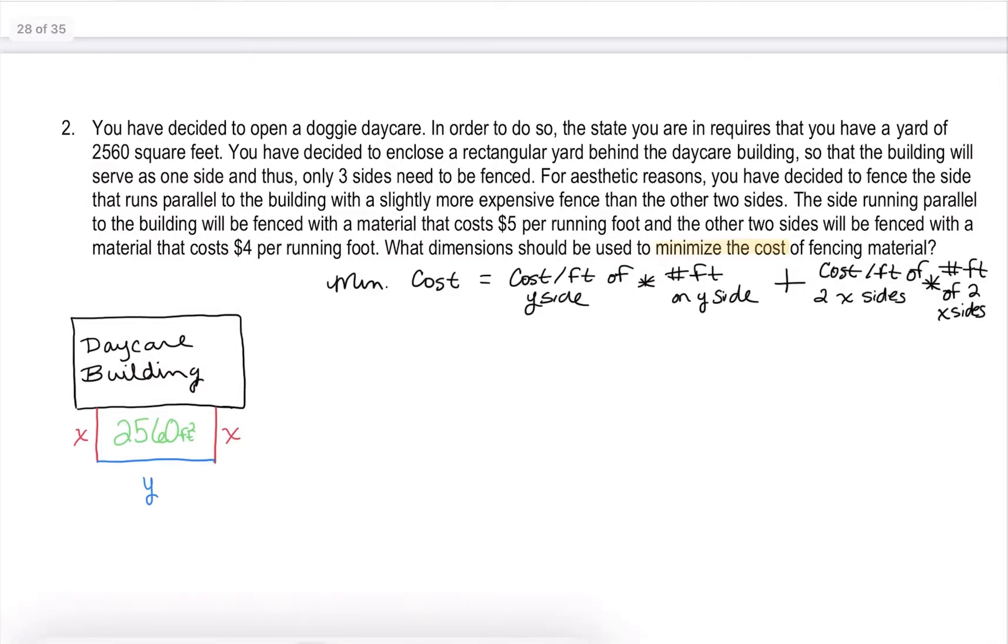All right, so the cost per foot of the y side. So that was the one that's a little more expensive. So who knows, maybe this building backs up to a street and they want that part to look a little bit nicer, whatever the reason is. So this is the one, so the side that is running parallel to the building, that is going to cost us $5 per foot. And the other two sides are costing us $4 per foot. All right, so let's jump in. Cost per foot then on the y side, we just said that that cost per foot is $5 and then times the number of feet. Well, that is literally what y represents. And so that's going to represent the cost of that blue portion of the fence.